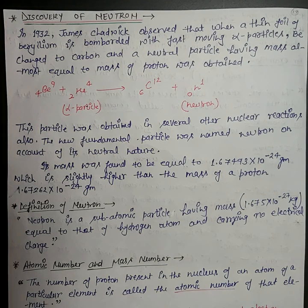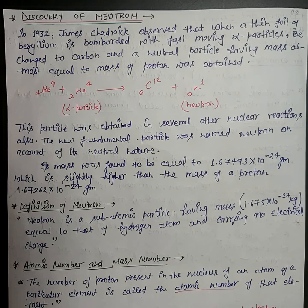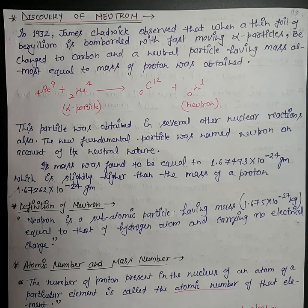Similarly, from Rutherford's nuclear model, an atom was supposed to be composed of only electron and proton. Since mass of electron is negligible compared to the mass of proton, the atomic mass of atom should be equal to the mass of the protons only. But it has been found that for all atoms except hydrogen, atomic mass is more than the number of protons.